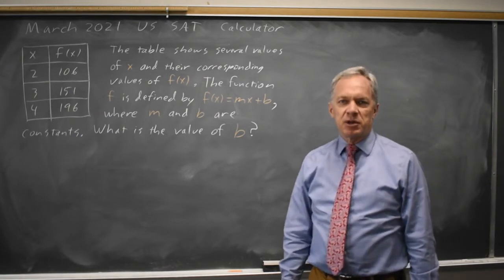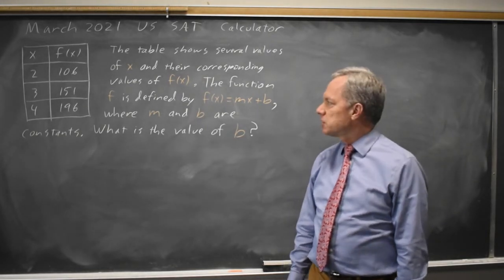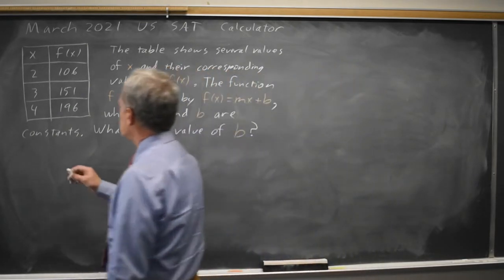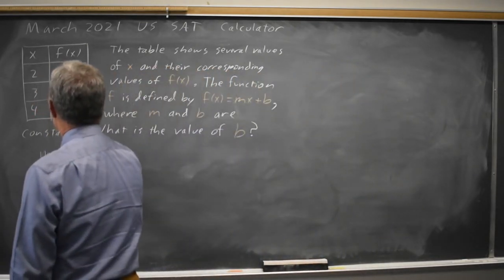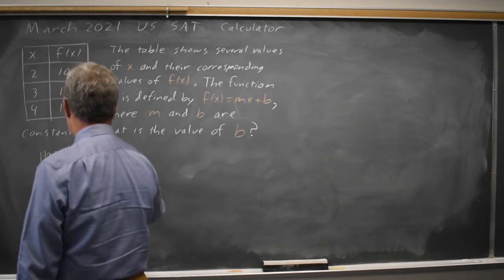I can either ask my graphing calculator to find the line of best fit, and that will directly give me the y-intercept, or I can solve for the slope, m equals y2 minus y1 over x2 minus x1.